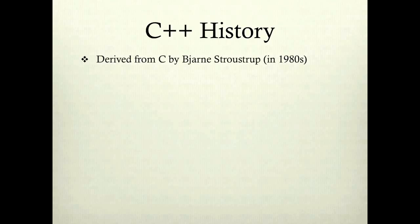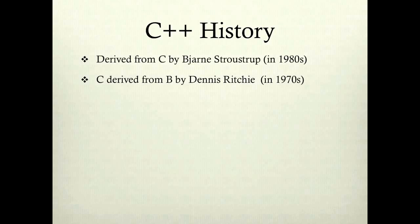C++ history: C++ was derived from C by Bjarne Stroustrup in the 1980s. C was derived from B by Dennis Ritchie in the 1970s, and B was derived from BCPL.